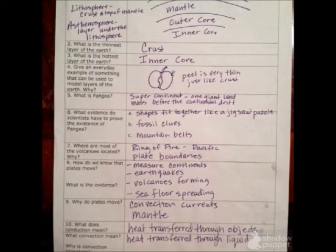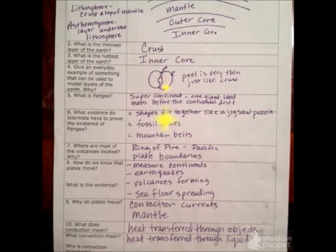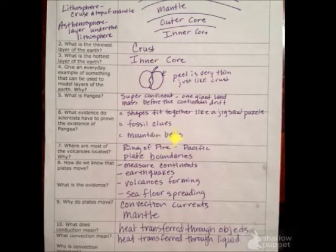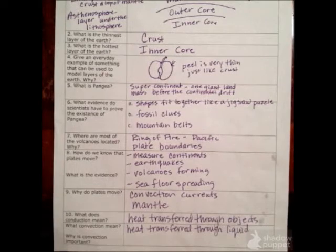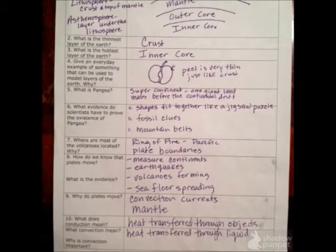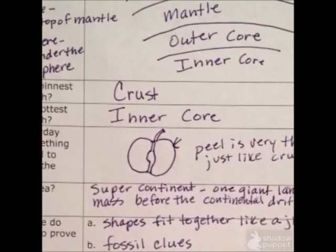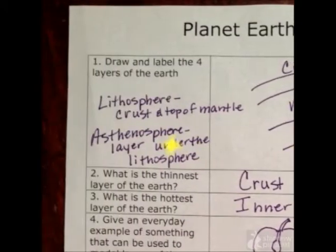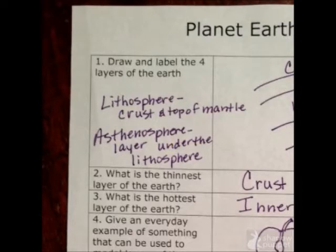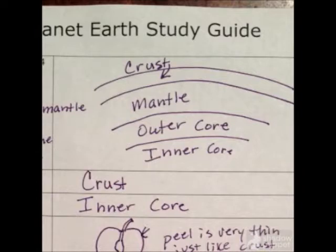Today we are going to be going through the study guide. So get your study guide out, or if you happen to have lost it, get out another piece of paper because you will be turning this in. Planet Earth study guide. First question: draw and label the four layers of the earth. You should definitely already know this, but here they are: the crust, the mantle, the outer core, and the inner core. Pause any time you need to, to be sure and write this down.